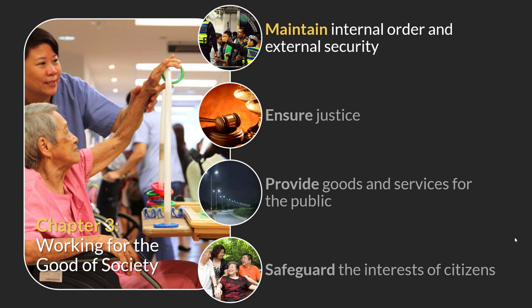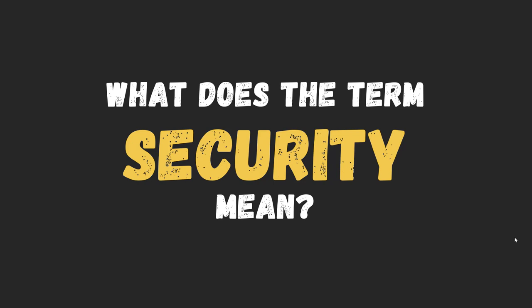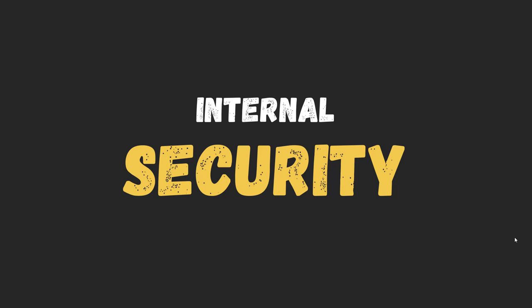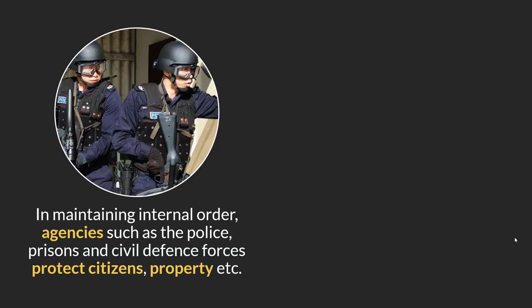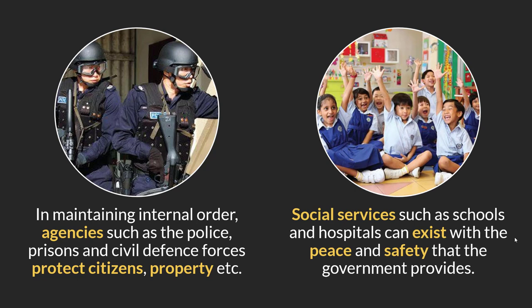This is part of the benefits you get as a citizen. What does the word 'security' mean to you? Security refers to two aspects: internal security and external security. For internal security, we are talking about police, prison, and civil defense — they protect citizens and their property. For example, if you are robbed, you expect the police to ensure you are safe and your property is hopefully recovered. We also talk about social services such as schools and hospitals to ensure peace and safety.